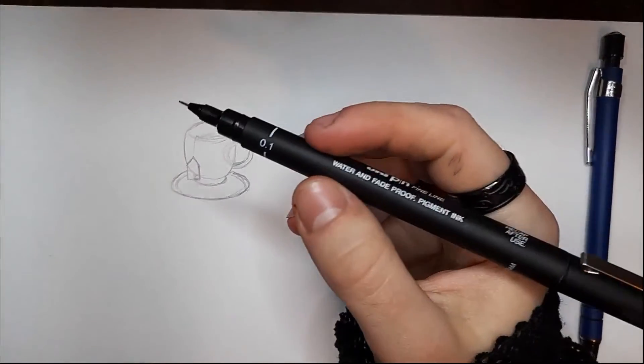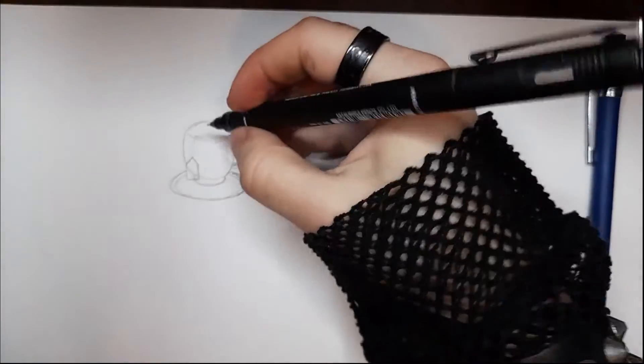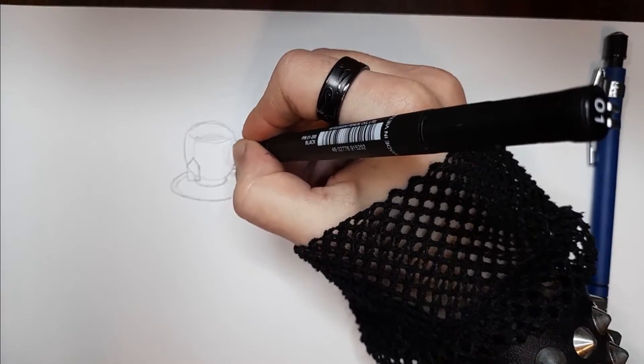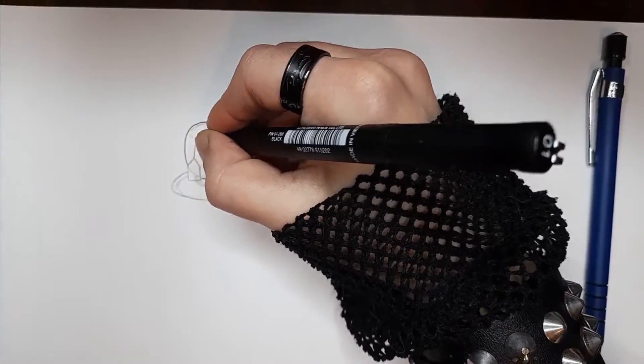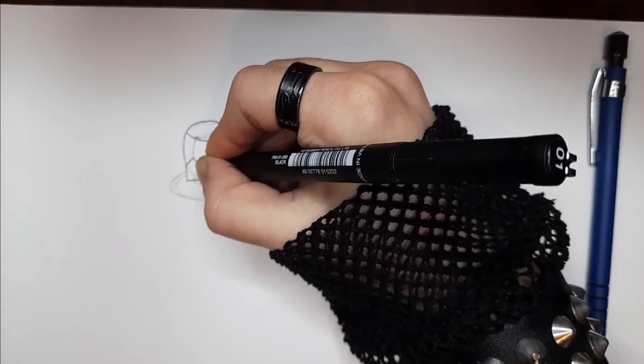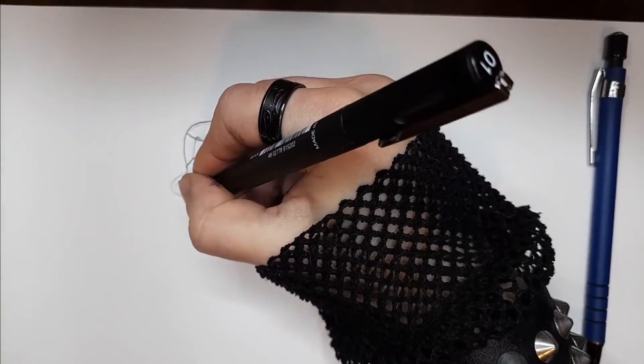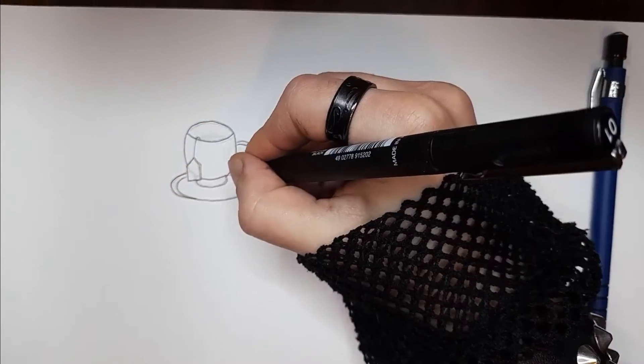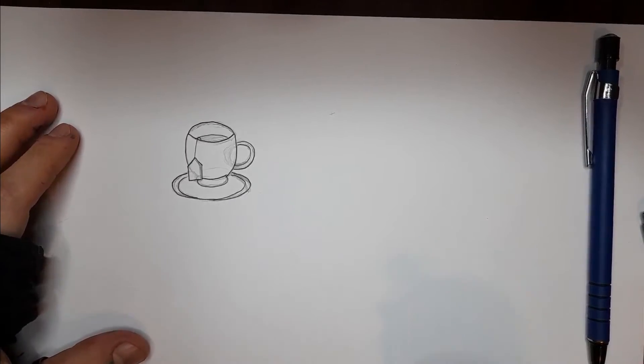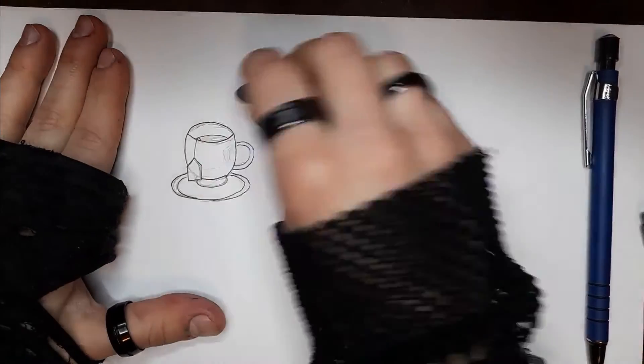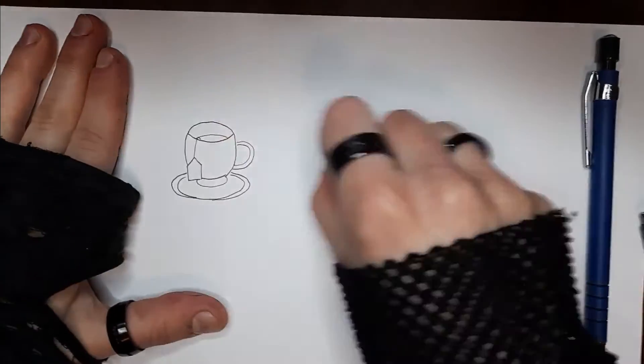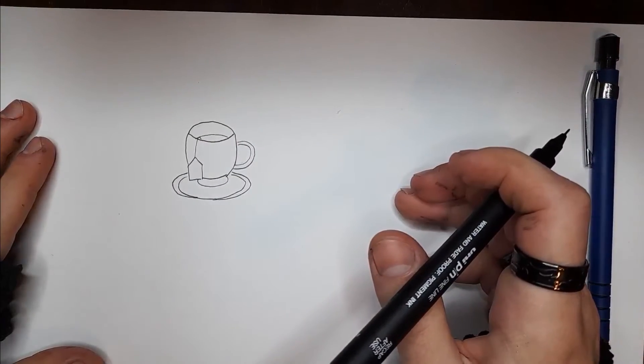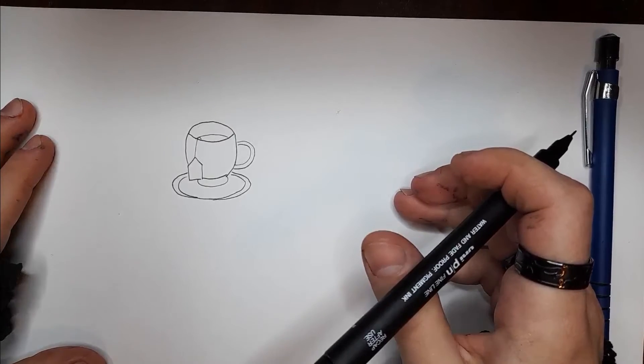I'm going to line it with a fine liner for a clean look. After this, you can just erase the pencil marks. From here, you can add any details you want.